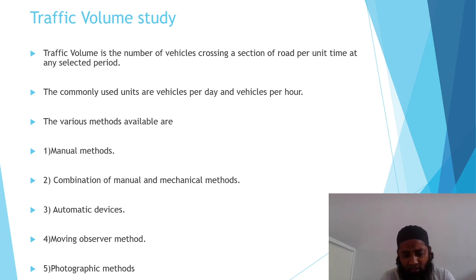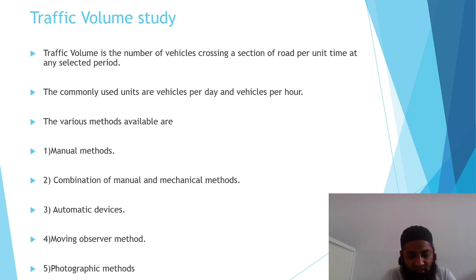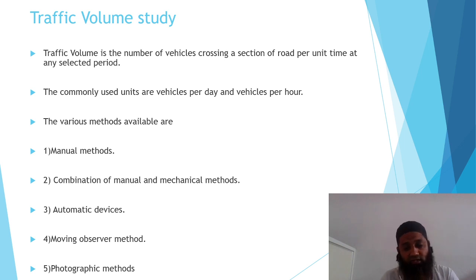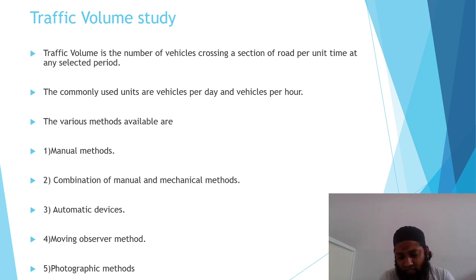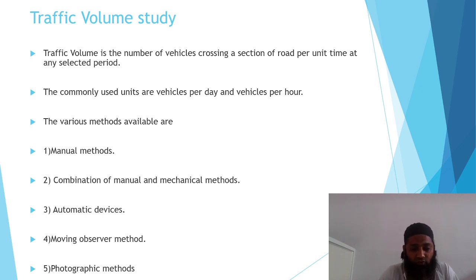We also use automatic devices where no manual recording is needed — automatic devices are placed, and from the data collected, we specifically segregate the vehicles. The moving observer method uses a camera placed on a vehicle that moves over that area; the camera records the number of vehicles passing from origin to destination, and from that video the traffic volume is then segregated. We also have photographic methods, used in situations such as mountainous areas where the climate keeps changing and other methods cannot be applied.